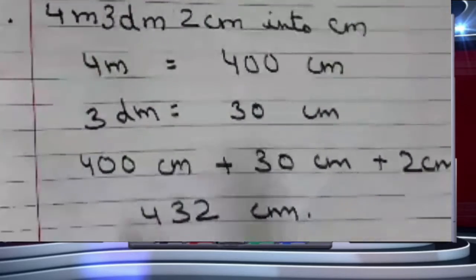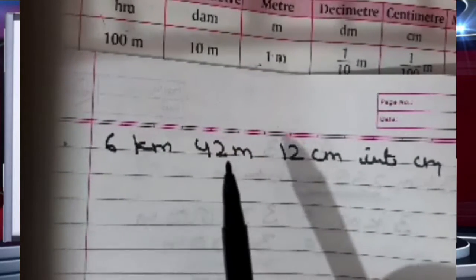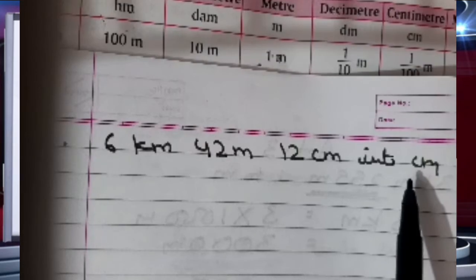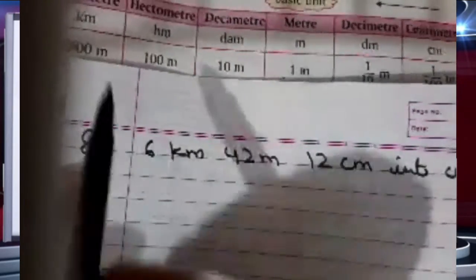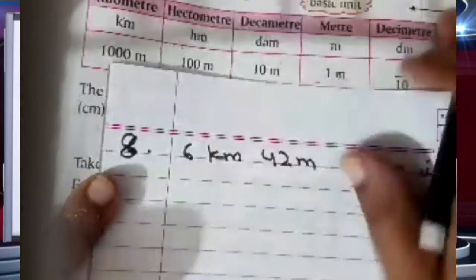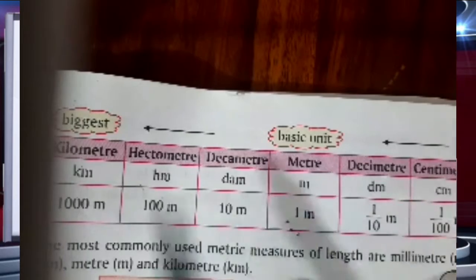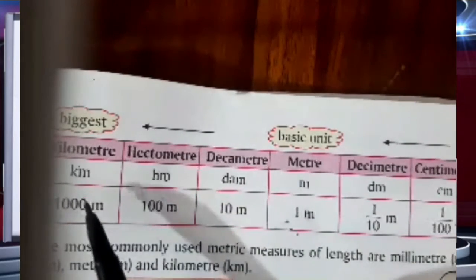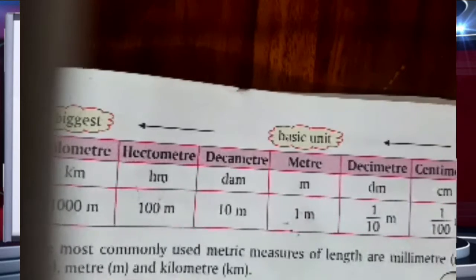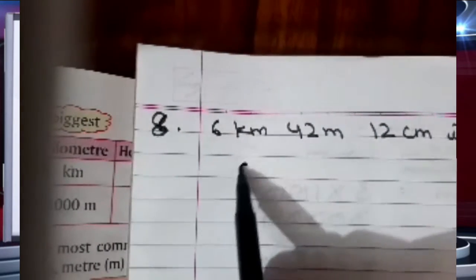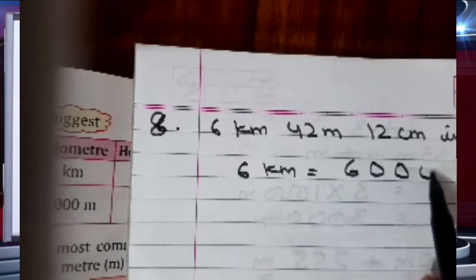Let us do one more part. Question number 8. We have to convert 6 kilometer, 42 meter, 12 centimeter into centimeter. So first of all we will convert 6 kilometer to centimeter. From kilometer to centimeter I count 1, 2, 3, 4, 5 — so I multiply with 5 zeros, that is 100000. So 6 kilometer will become 6 lakhs centimeter, which is 600000.